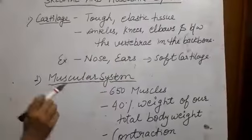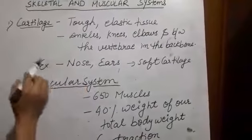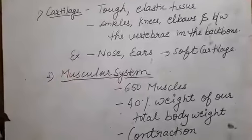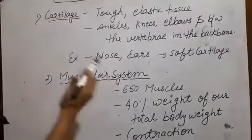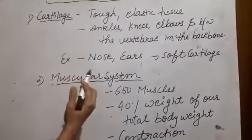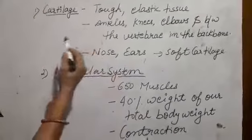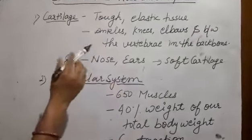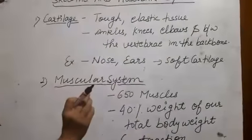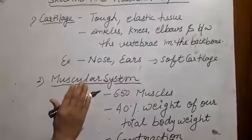Soft cartilage protects our body. Cartilage prevents our bones from rubbing against each other and wearing out. This protects us from the outer environment.